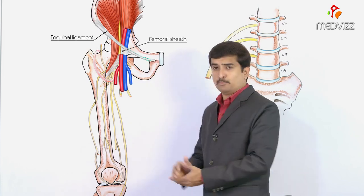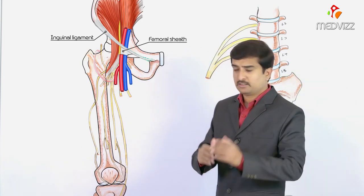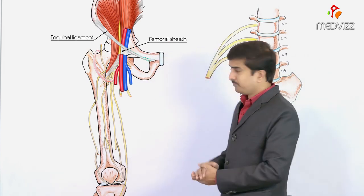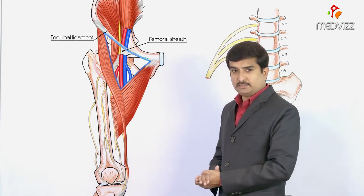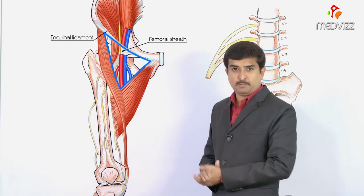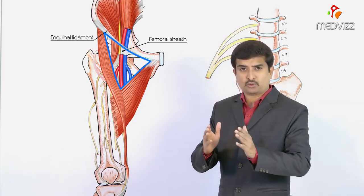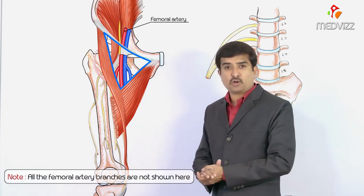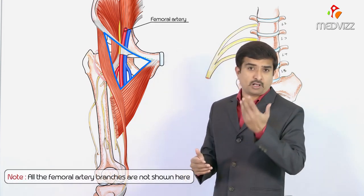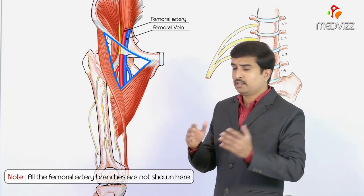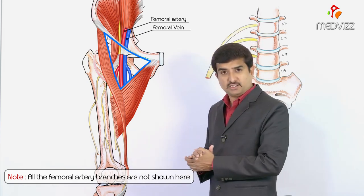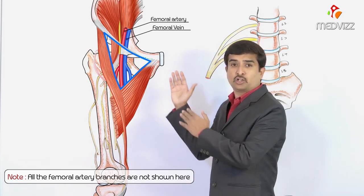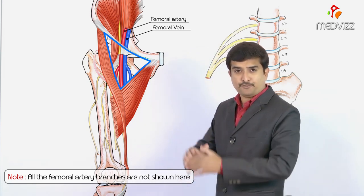The femoral nerve enters the thigh behind the inguinal ligament, lateral to the femoral sheath. In the femoral triangle, the nerve is lateral to the femoral artery. The femoral artery and femoral vein are enclosed by the femoral sheath, which is why the femoral nerve is described as lateral to the femoral sheath.